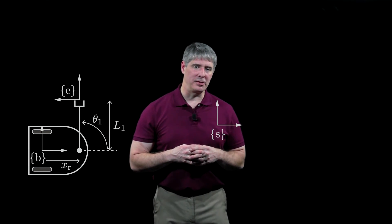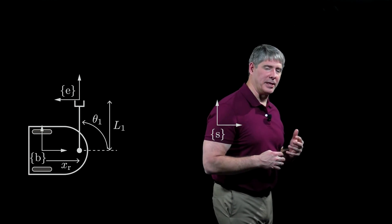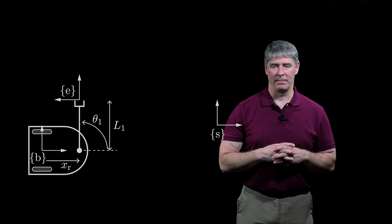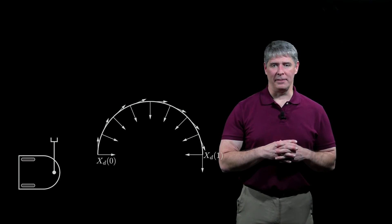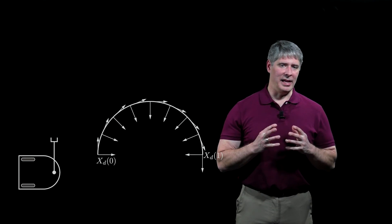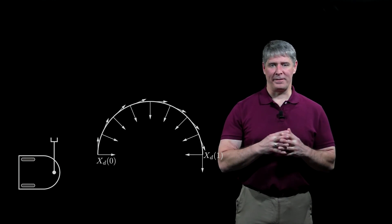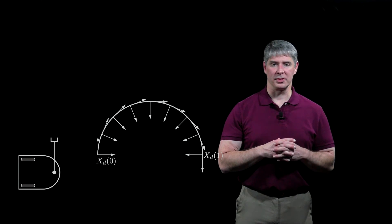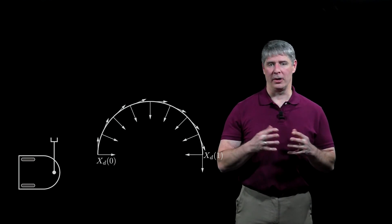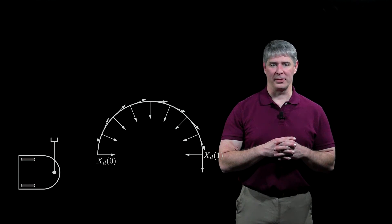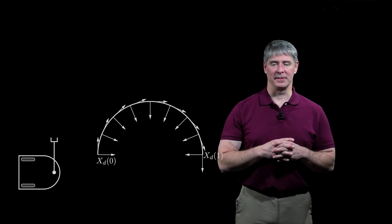As an example, consider a planar mobile manipulator with a diff drive mobile base and a robot arm with a single revolute joint. The desired path for the end effector is a semicircle, and the end effector has a large initial error. The path is specified by three variables, and the robot has three controls, one for each wheel and one for the arm joint. So the robot in this example is not redundant for the task of trajectory following, as it was for the example at the beginning of this video.